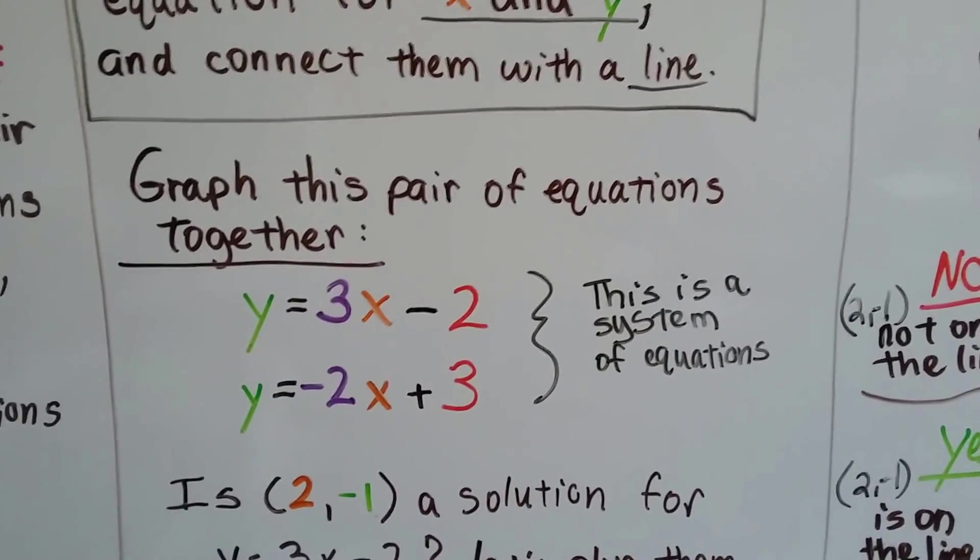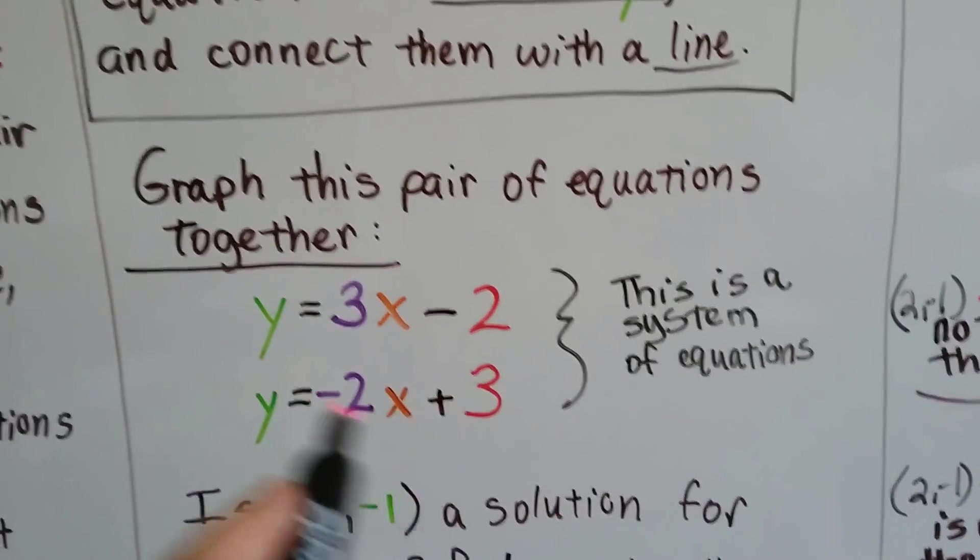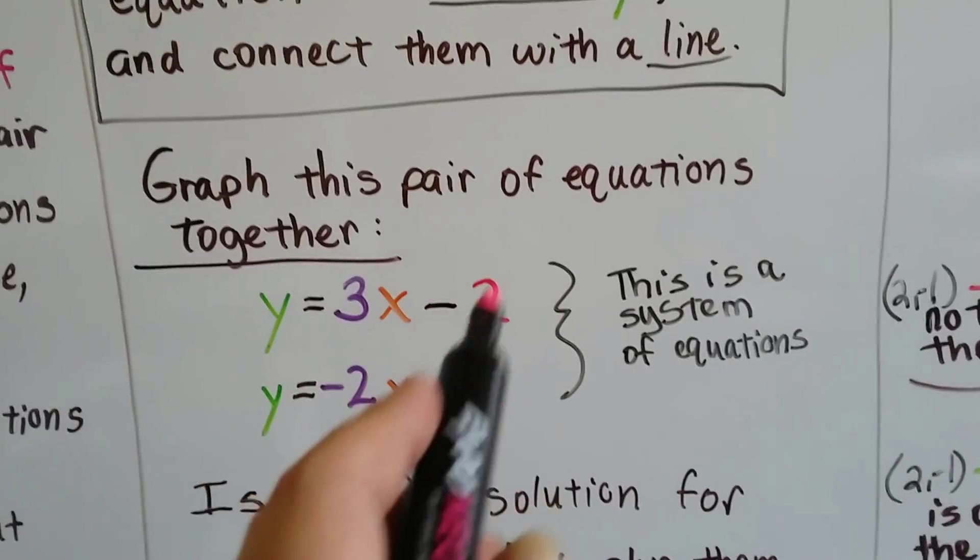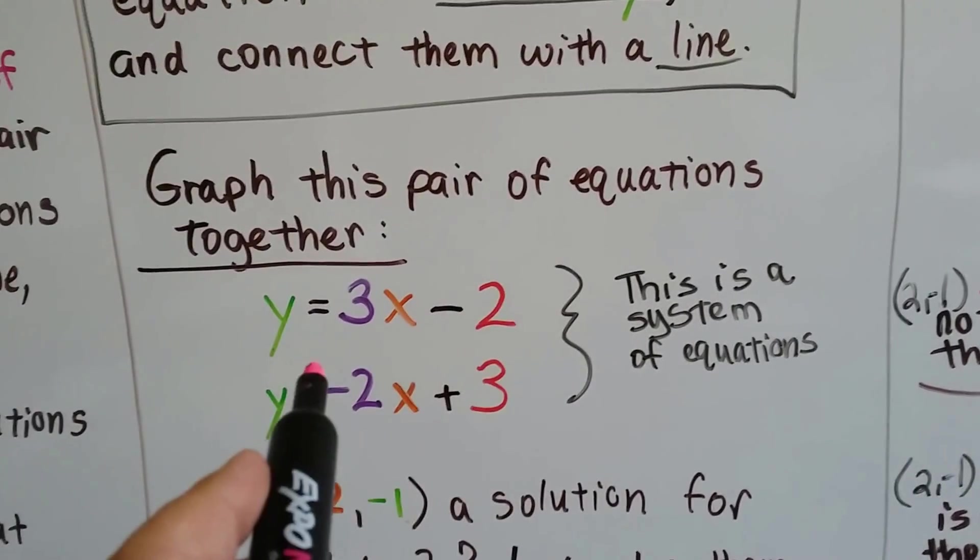If we're told to graph this pair of equations together, this is a system of equations. It's two equations that have the same variables. So it could be two or more equations. So here's two.